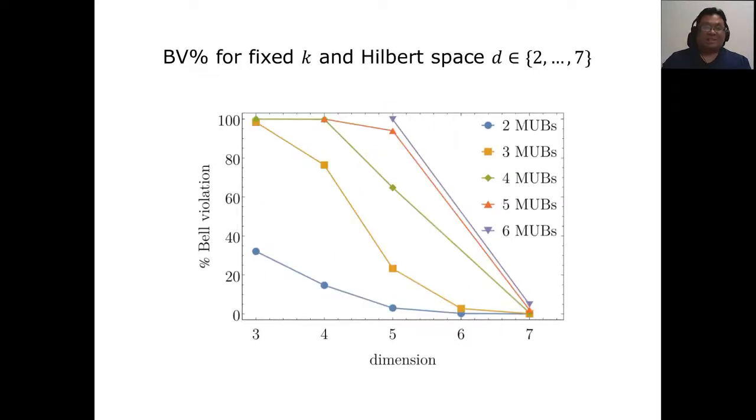This is a plot of the opposite trend. This time, we fix the number of MUBs that Alice and Bob will measure and vary the dimension. Here we get the opposite trend. As you increase the dimension, when you fix the number of MUBs, then you have less and less violation, which seems to say that you have fewer combinations relative to the number of possible combinations with increasing dimension.